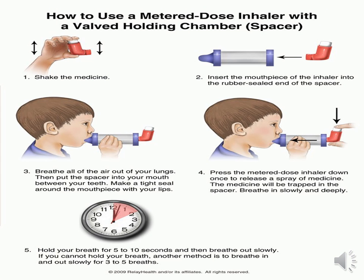How to use a metered dose inhaler with a spacer: Shake the medication. Insert the mouthpiece of the inhaler into the rubber-sealed end of the spacer. Breathe all the air out of the lungs, then place the spacer in the mouth between the teeth, making a tight seal with the lips around the mouthpiece. Press the metered dose inhaler one time to release a spray of medication — the medicine will be trapped in the spacer. Breathe in slowly and deeply, hold the breath for 5 to 10 seconds, then breathe out slowly. If unable to hold the breath, breathe in and out slowly for 3 to 5 breaths.